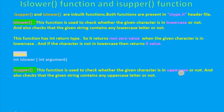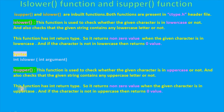isUpper function: This function is used to check whether the given character is in uppercase or not, and also checks that the given string contains any uppercase letter or not. This function has int return type. It returns a non-zero value when the given character is in uppercase, and if the character is not in uppercase then it returns zero.